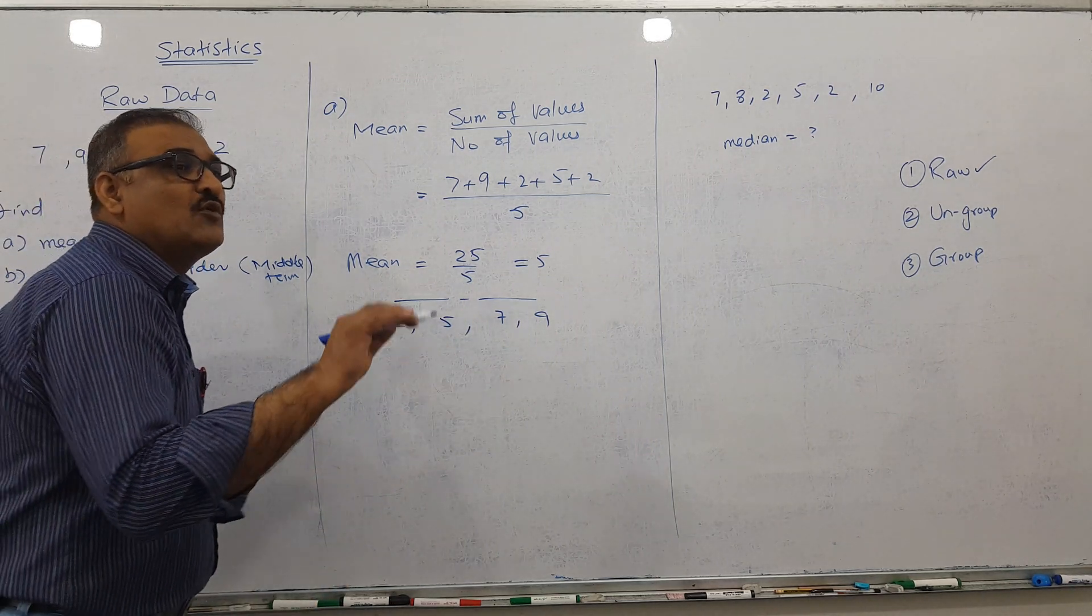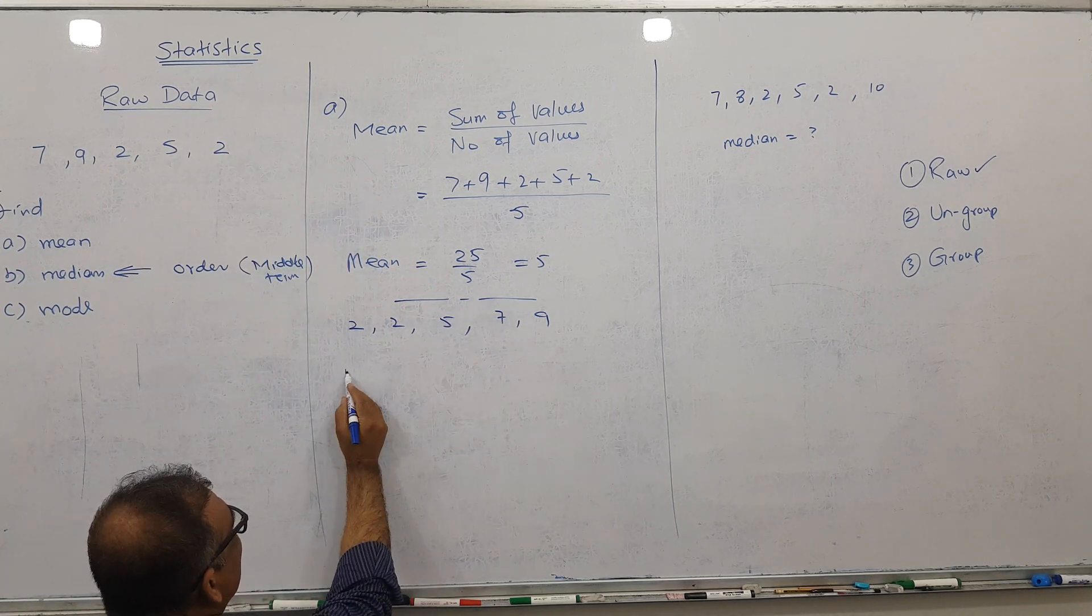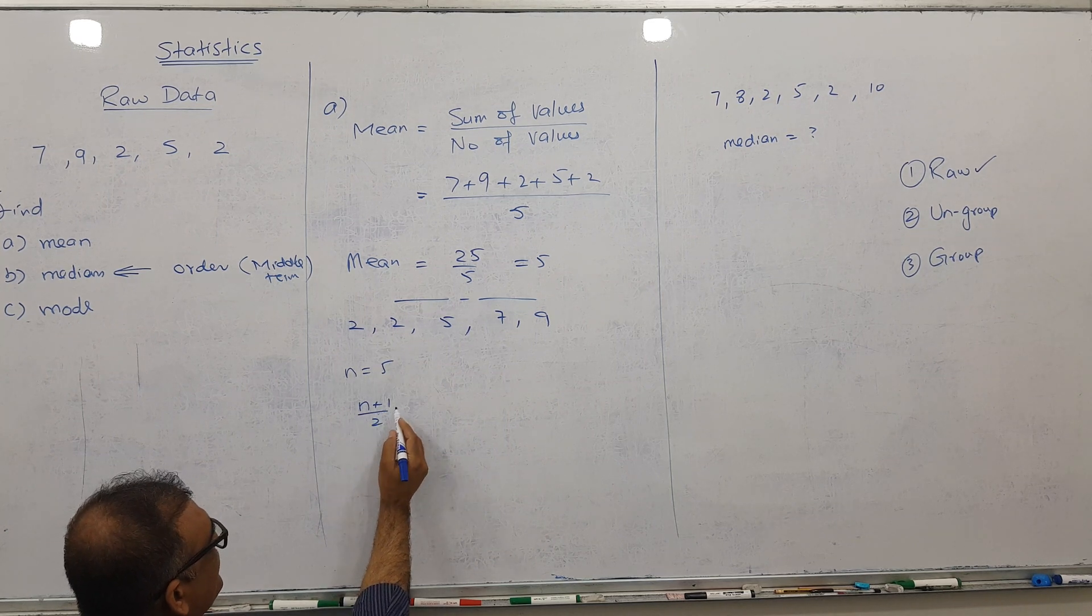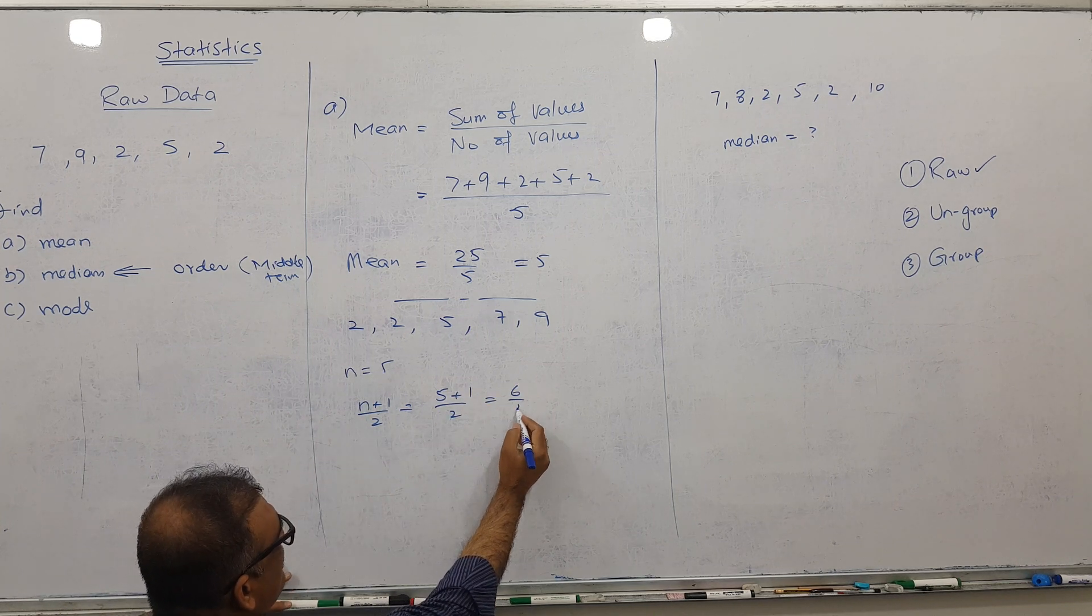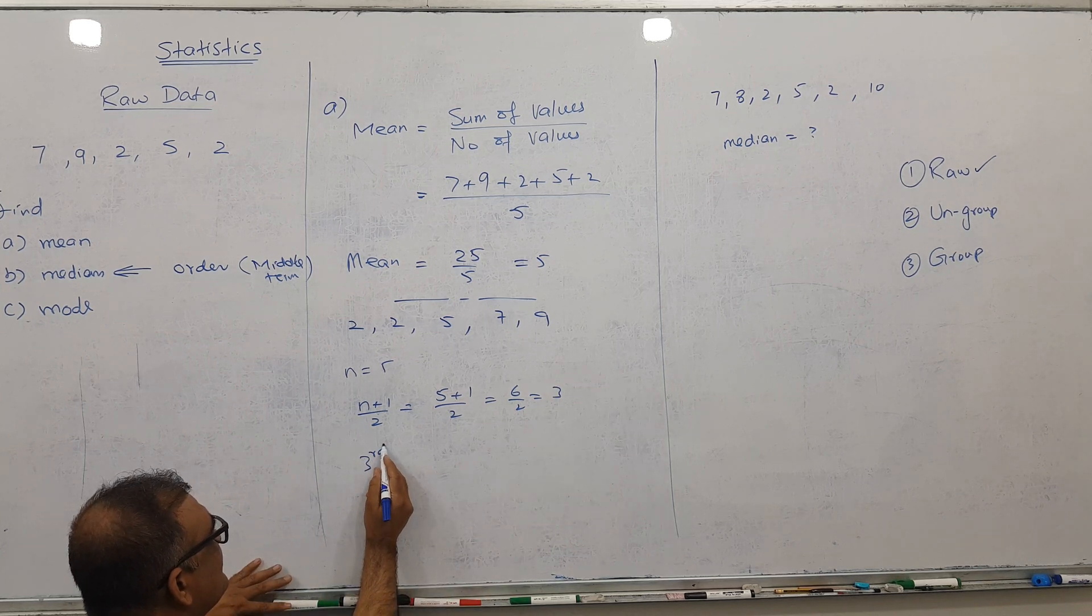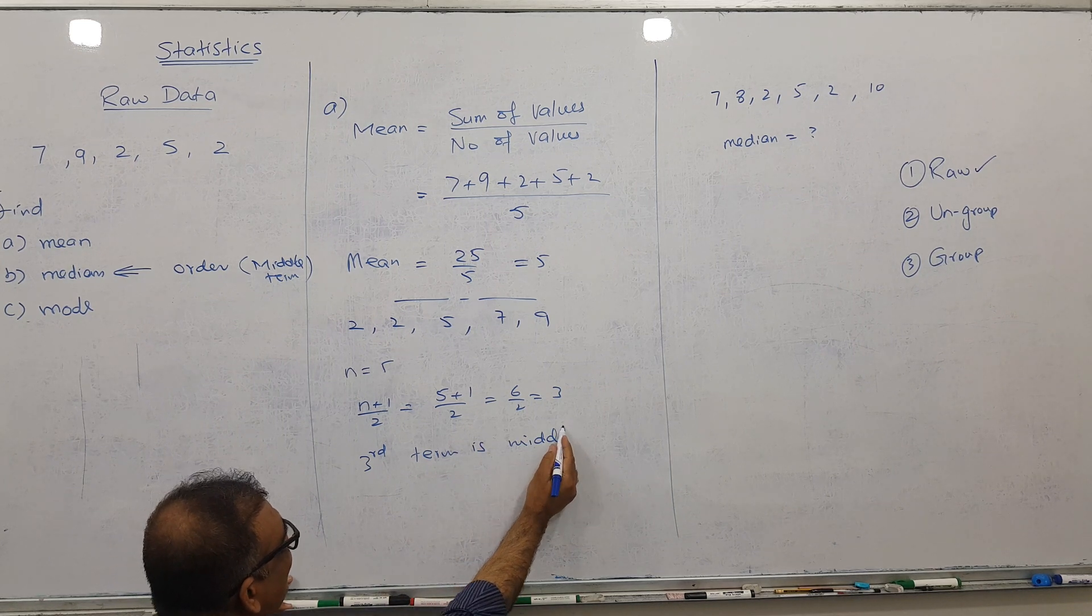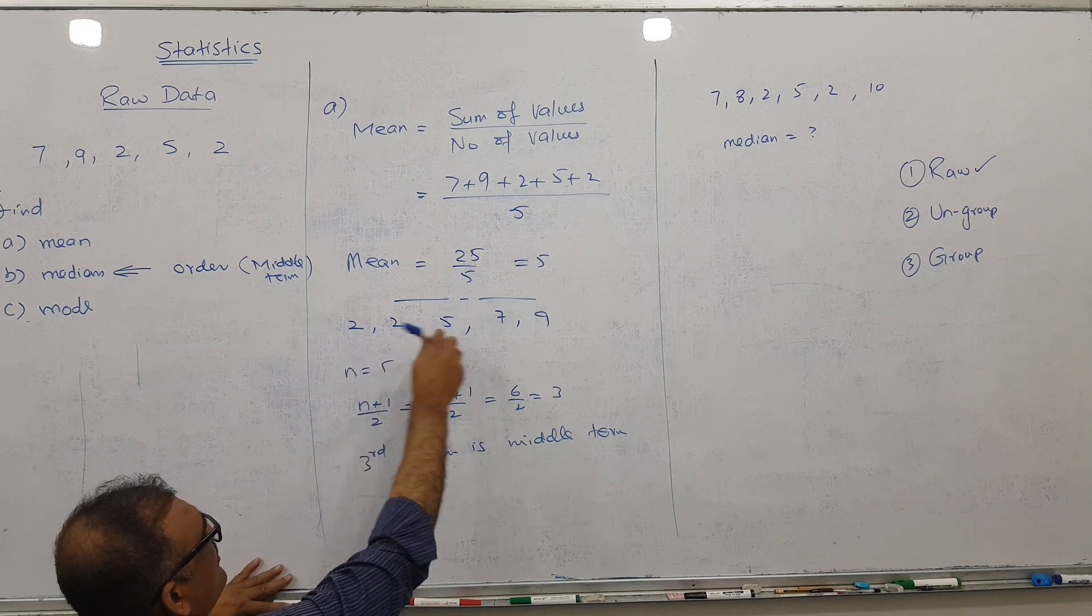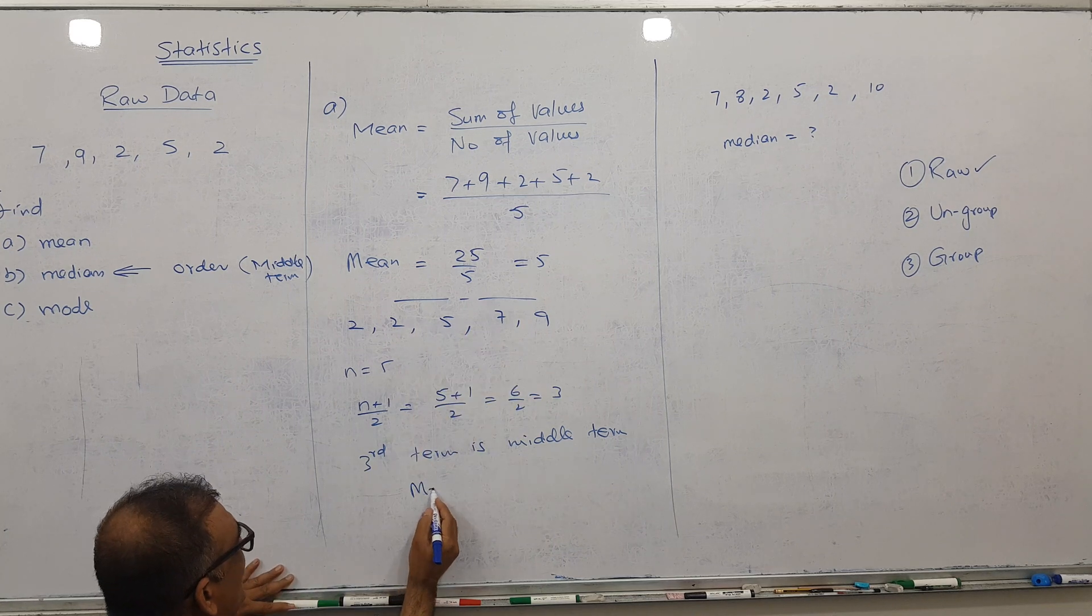There's one formula: n is 5, so we have a formula n plus 1 divided by 2. When I put 5 here, 5 plus 1 I get 6 divided by 2, I get the third term. The third term is the middle term. Count from this corner or from this corner, 1, 2, 3. So median equals 5.